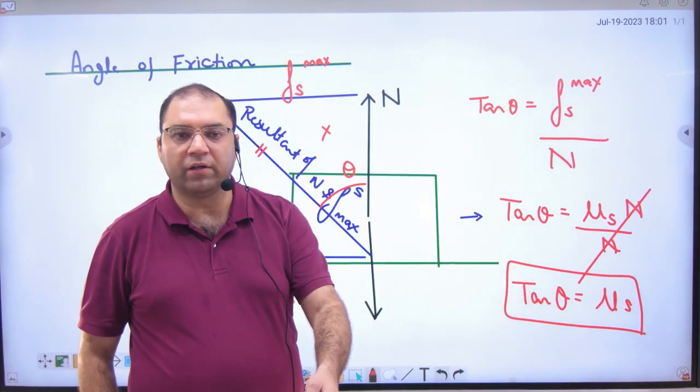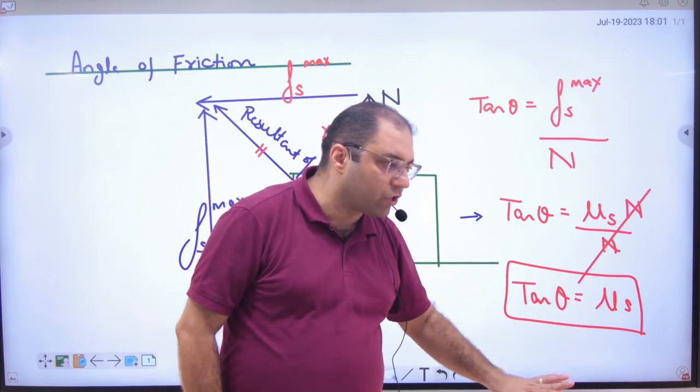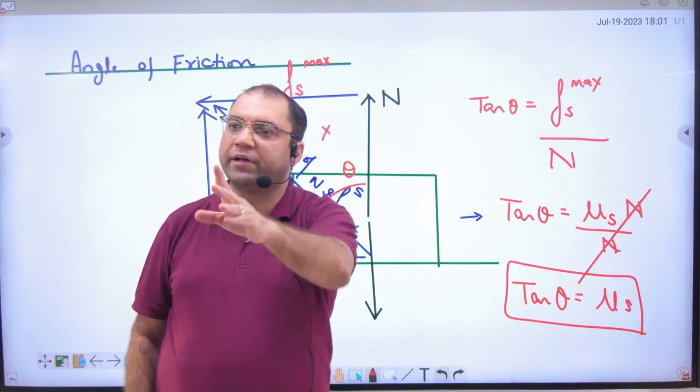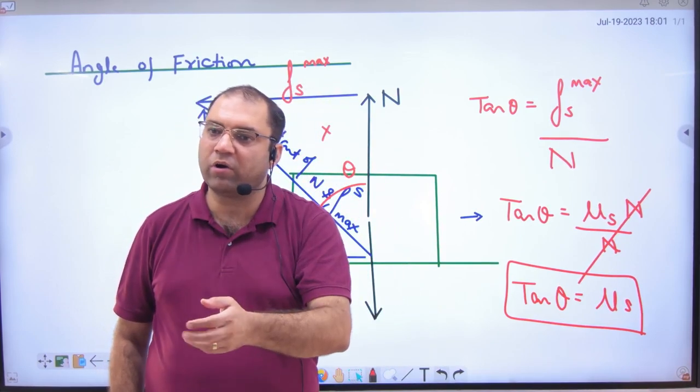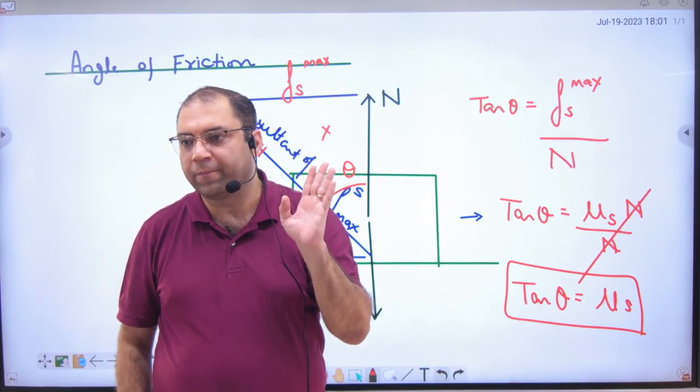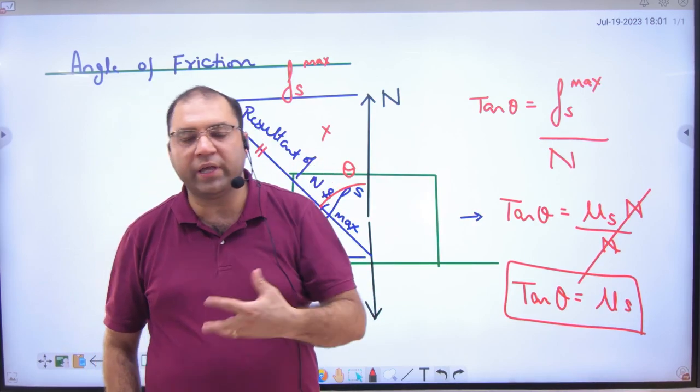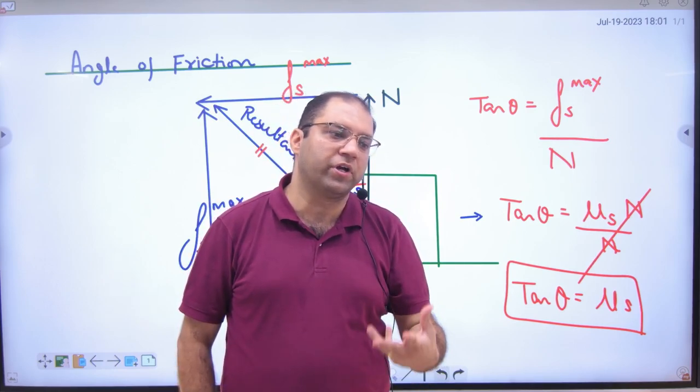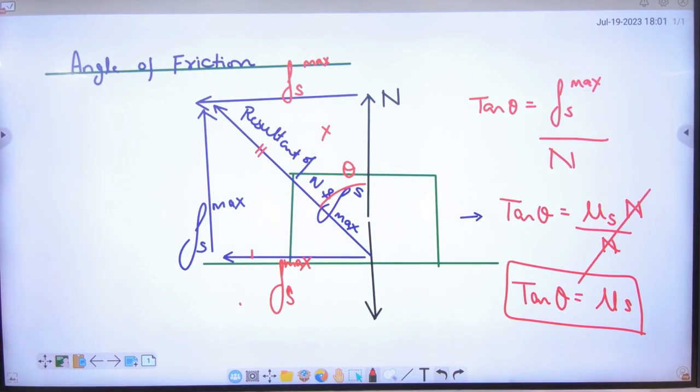Instead of giving coefficient of static friction, they will give you angle of friction. He will say angle of friction 60 degrees, so μ_s equals tan 60, which is root 3. So this is a way to explain angle of friction. This is angle of friction.